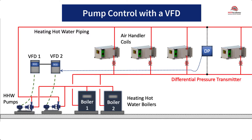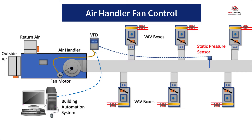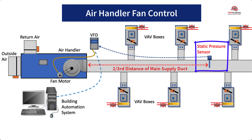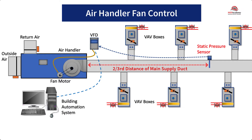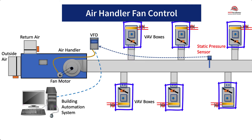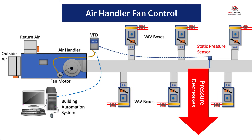The same thing is used for fan control. The theory is the same for controlling the speed of the fan motor. There is some form of monitoring of the supply air duct, which will cause an adjustment to the speed of the fan, the RPM. In the scenario here, a static pressure sensor is located two-thirds of the way down the main supply air duct. The sensor will pick up changes in pressure within the duct.